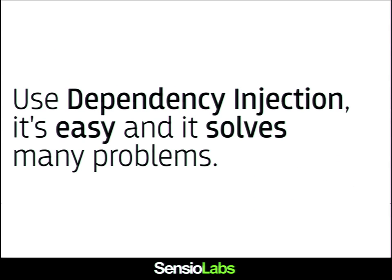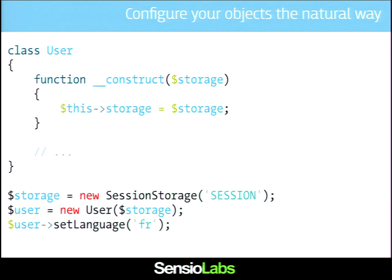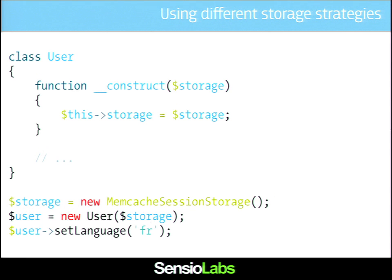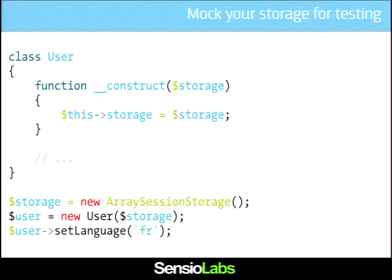Dependency injection is something that is really easy to understand and solves many problems. There's no need to reinvent the wheel. If you are using dependency injection, everything becomes natural. If I want to change the session storage — say I want to store my session in memcached — I can just swap the dependency, create a memcached session storage, and inject it into the user. The user doesn't care about which kind of session storage you are actually injecting. For testing, you can create an array session storage, very easy to do.